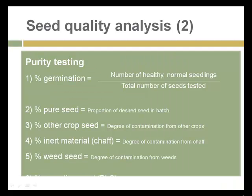To certify the purity of a given batch of seeds, a number of ratios are calculated. First is the percent germination from the germination test. Second is the percent of pure seed — the proportion of the desired seed in a batch versus other contaminants. Next is the percent of other crop seeds — contamination from other crops — and then inert materials such as chaff.